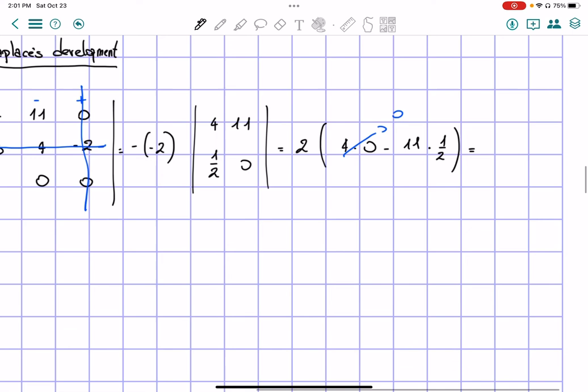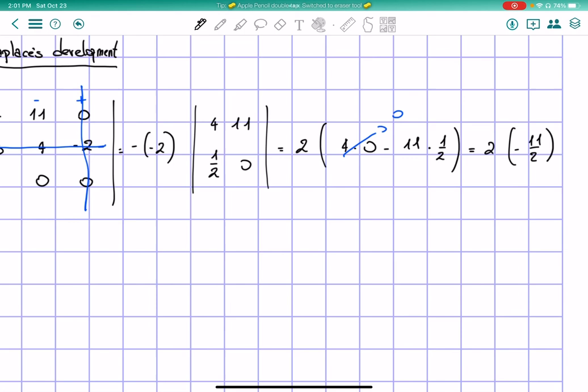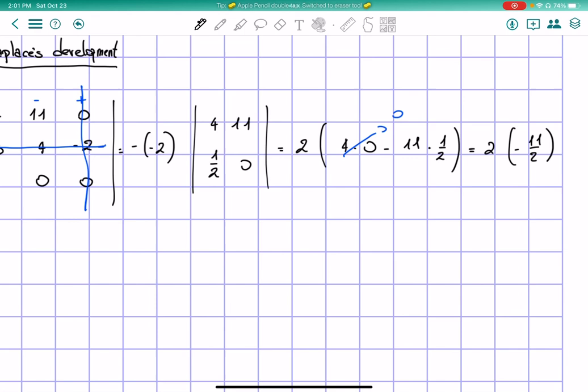And we get 2 times negative 11 over 2. So we can cancel the 2 and the 2, and we get as an answer negative 11. And that is our answer.